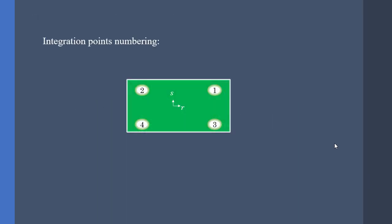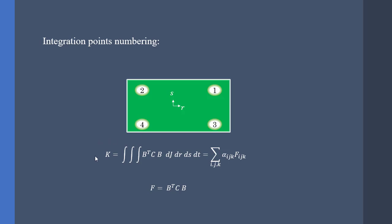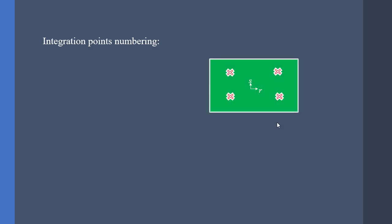For any problem, we have to assume an element. I've assumed a four-node element with four integration points, and their shape function is as follows. R and S are representative of the natural coordinates. We have to use the following equation to obtain the stiffness matrix, but we cannot use the integration scheme straightforwardly. So we have to use the Gauss-Legendre numerical integration scheme, and this is called the full integration procedure.